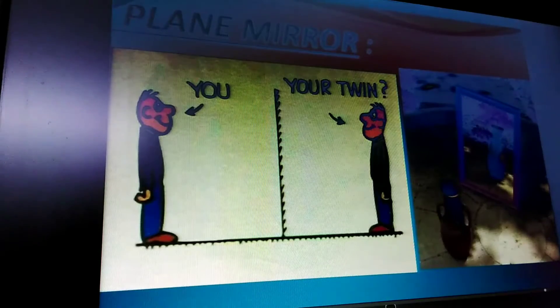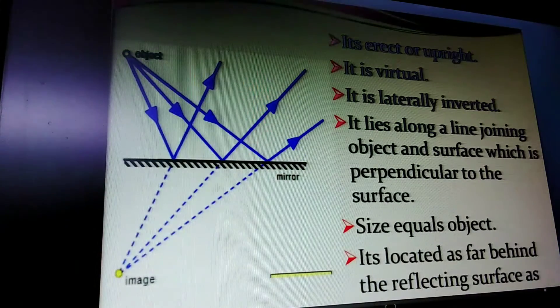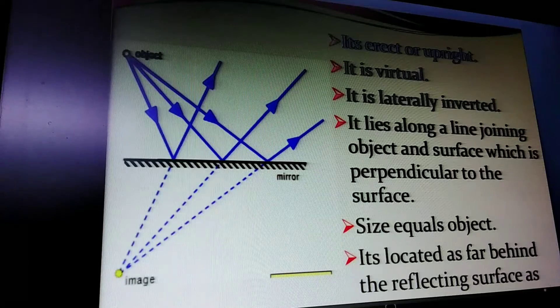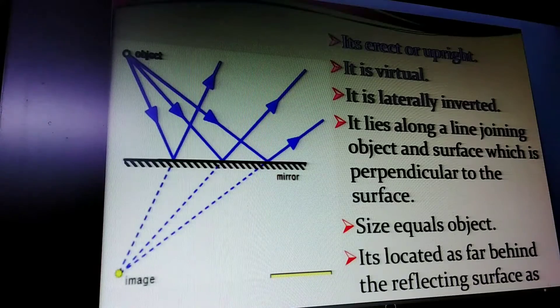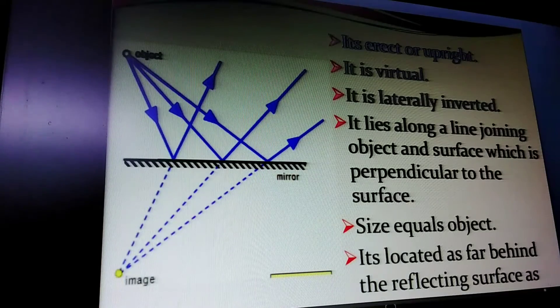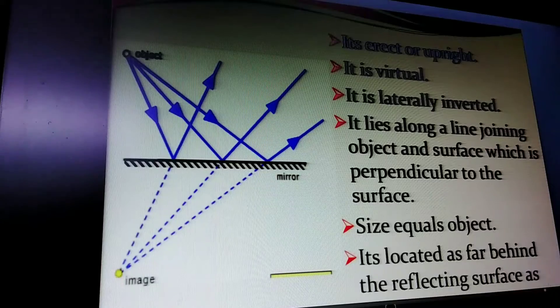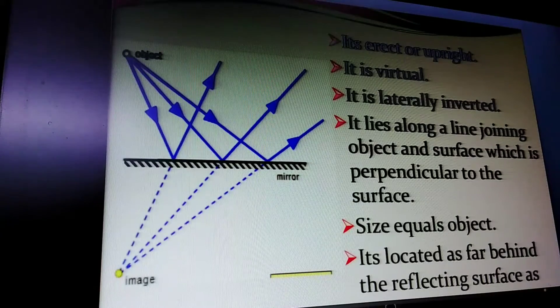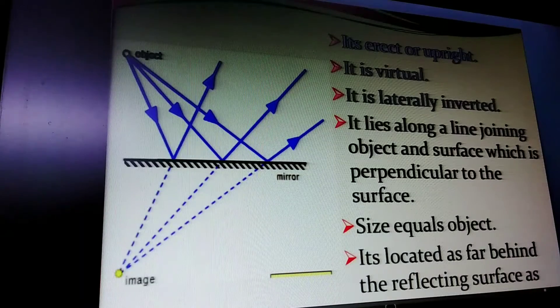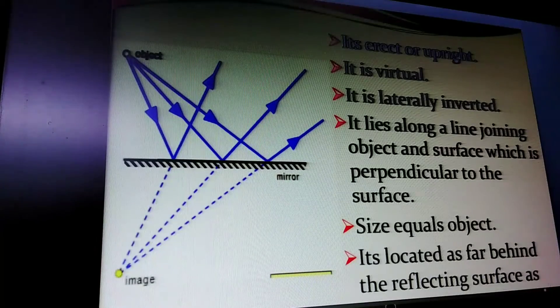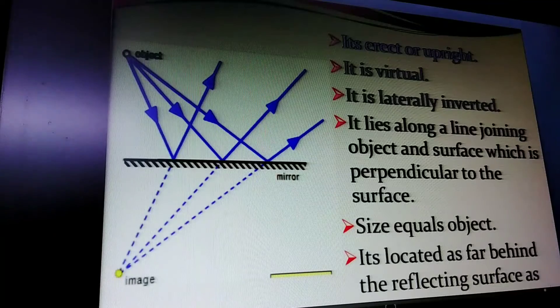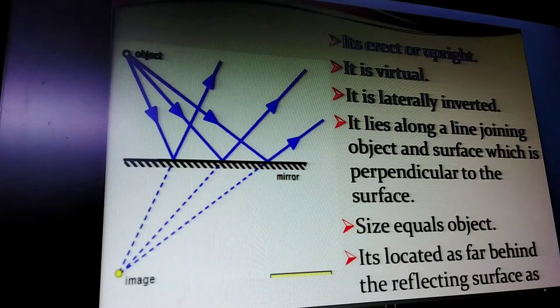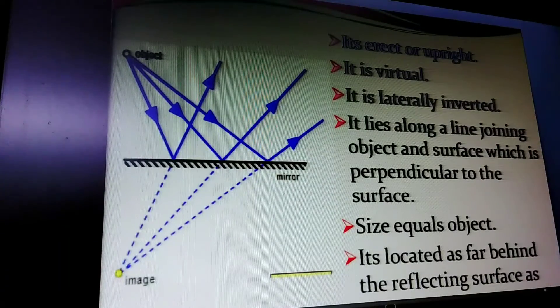The image cannot be caught on a screen. It is erect or upright, virtual, and laterally inverted. It lies along the line joining the object and surface, perpendicular to the surface. The size equals the object, and it is located as far behind the mirror as the object is in front.